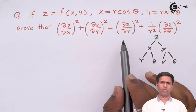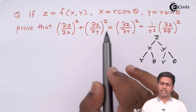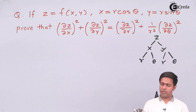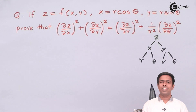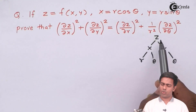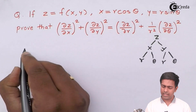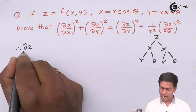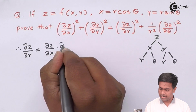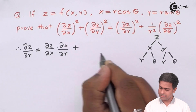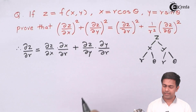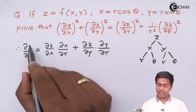By finding the values of the right-hand side, you easily get the left-hand side. To find out del Z by del R, we apply the formula by traveling the tree from Z to R. There are two paths: Z to X then X to R, and Z to Y then Y to R. Therefore, del Z by del R equals del Z by del X times del X by del R, plus del Z by del Y times del Y by del R.